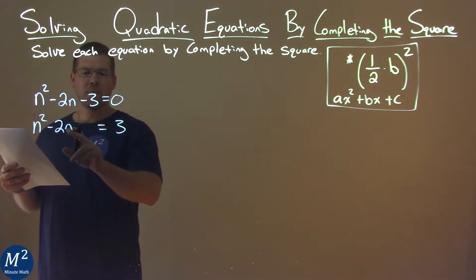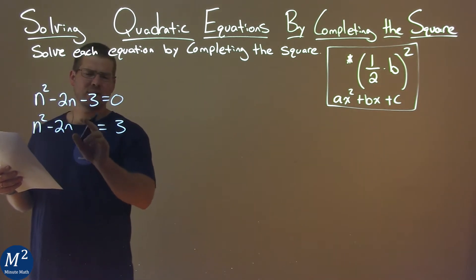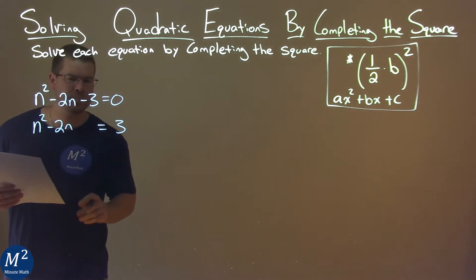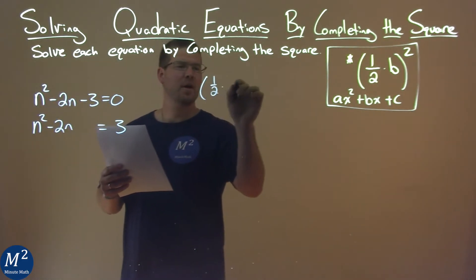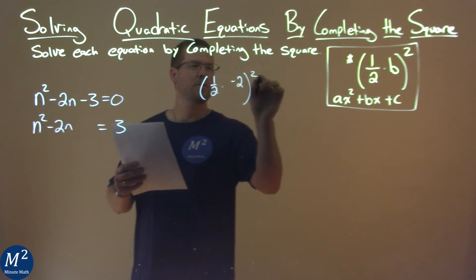Now I'm going to look at my b-value. Notice I put a space here - it's going to be helpful. My b-value is -2, so I use my formula: (1/2 × -2)².